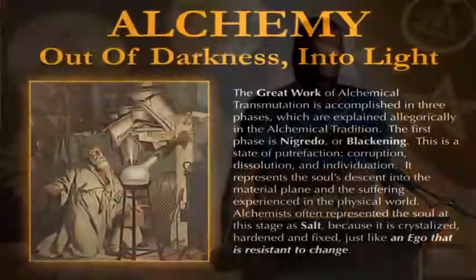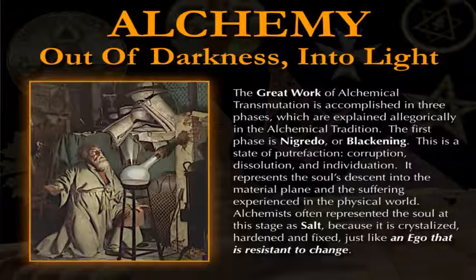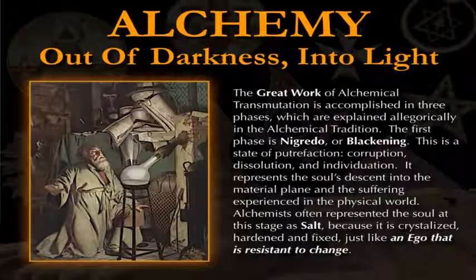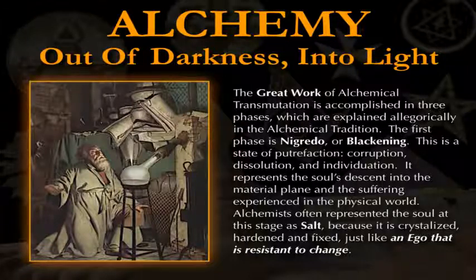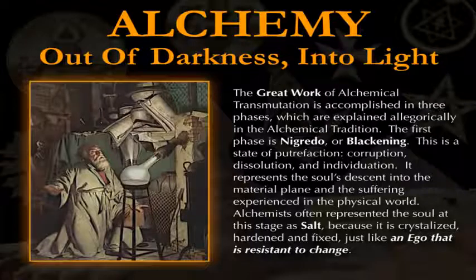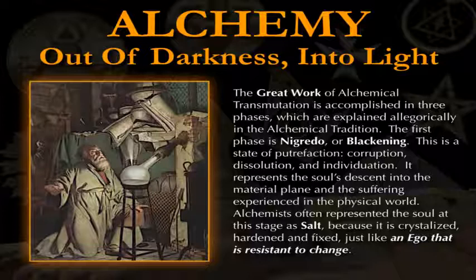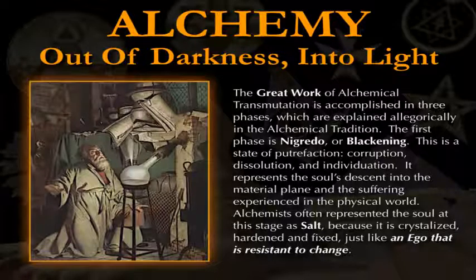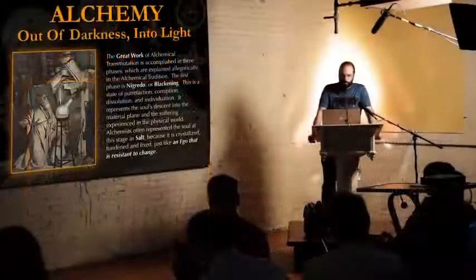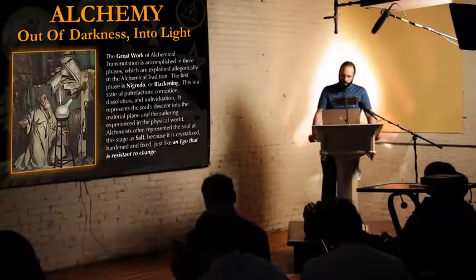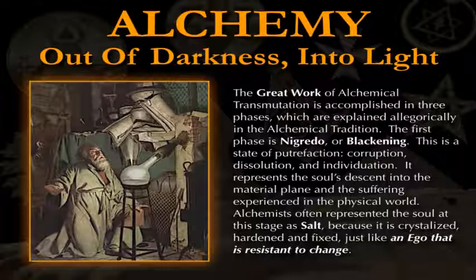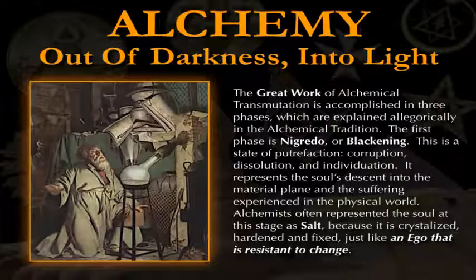The great work of alchemical transmutation is accomplished in three phases. These three phases of transformation in alchemy are all explained allegorically. The first phase was called nigredo. Nigredo means blackening in Latin. This is a state of putrefaction, of breaking something down, corruption, dissolution, individuation, descent into matter, descent into the undifferentiated and into chaos. It represents the soul's descent into the material plane and the suffering experienced in the physical world. Alchemists often represented the soul at this stage as the element of salt, because salt is crystallized, it's hardened, it's fixed, just like an ego that is resistant to change.